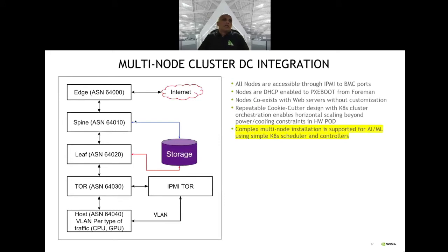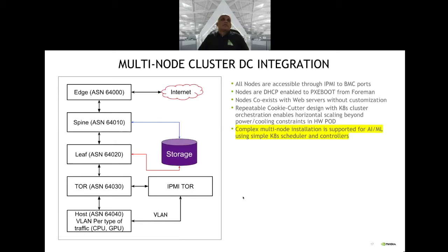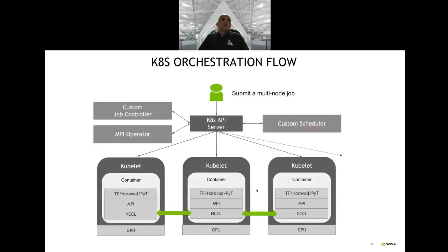The traditional edge-spine-leaf-ToR switching structure is familiar to most. Storage can reside close to the leaf for local traffic or move up into the spine. IPMI connects to the BMC on switches for management. I'll now hand off to Nivedita to talk about the control plane, and she will conclude with performance numbers.